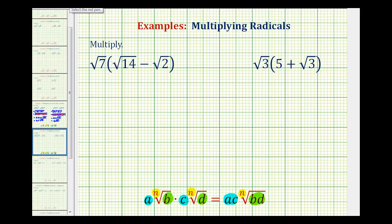In our first example, we have the square root of seven times the quantity square root of 14 minus the square root of two. So we need to distribute the square root of seven. For square root of seven times square root of 14, we would have the square root of seven times 14, minus square root of seven times square root of two, which would be the square root of seven times two.